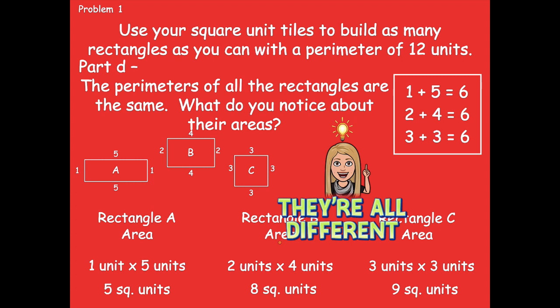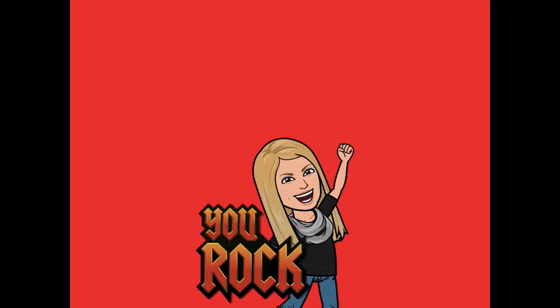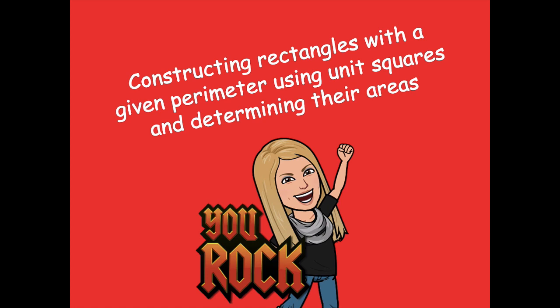Now that we've done this one, you're ready to work on problem 2 independently. It's very similar to problem 1, so hopefully this will set you up for success. You guys did a great job constructing rectangles with a given perimeter using unit squares and determining their areas. Please head back to the module to see what you need to complete for independent practice. If you have any questions, let me know — I'd be more than happy to help. Have a great rest of your day, bye friends!